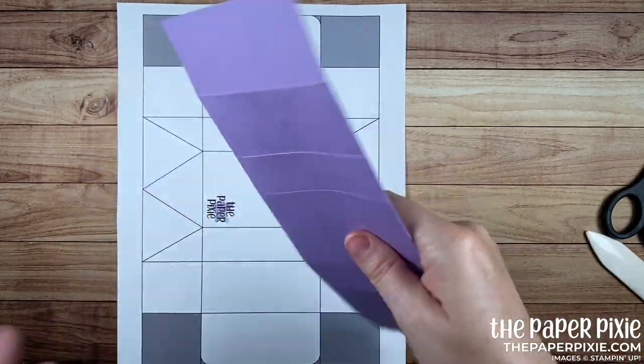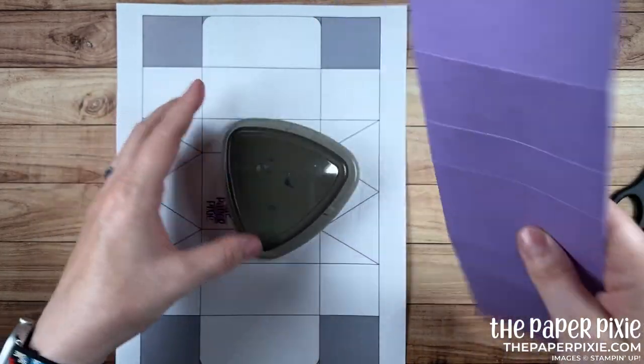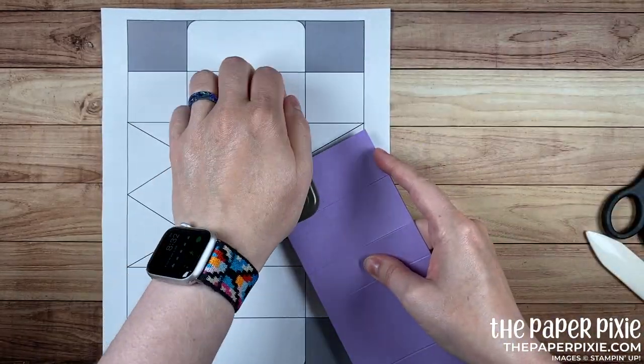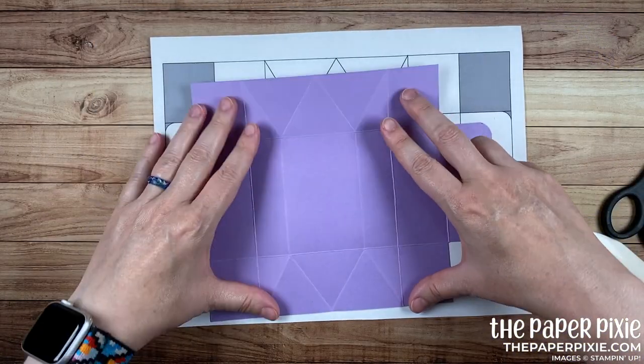All right now the next thing we're going to do is round all four corners of these flaps using the detailed trio punch. So now this is going to look like our template.